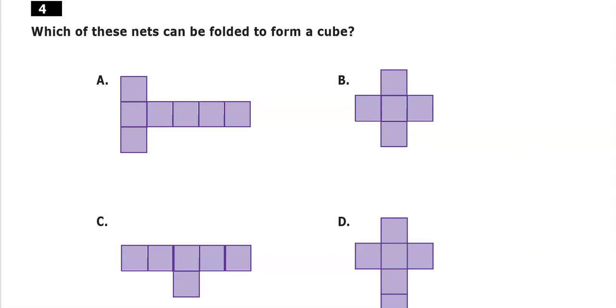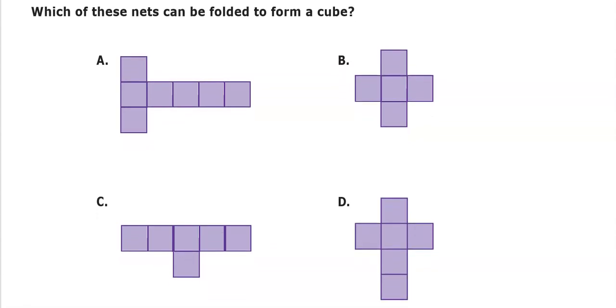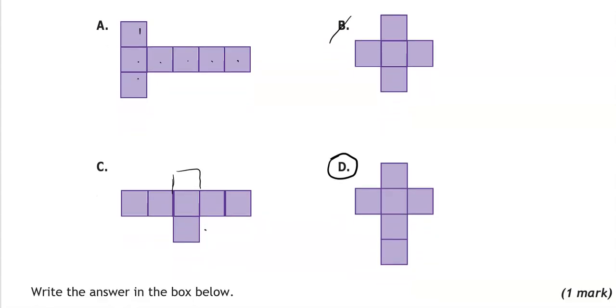Which of these nets can be folded to form a cube? And that is option D. Why is it not any of the other ones? We know that we need 6 faces. So this one doesn't have 6. This one has 6 but it hasn't got another face on the other side. And this one here has 1, 2, 3, 4, 5, 6, 7. So it has 1 more than we need.